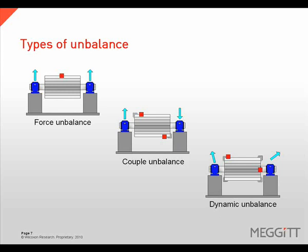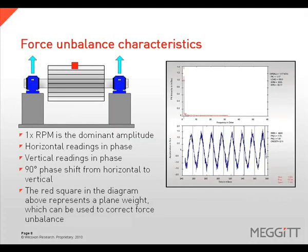The phase is represented in the presentation by the turquoise arrows. Force unbalance will exhibit a dominant 1 times rotational speed amplitude. The horizontal as well as the vertical phase readings will be in phase, with a 90 degree phase shift from the horizontal measurement plane to the vertical measurement plane. This type of unbalance can be corrected with a single plane weight placement.